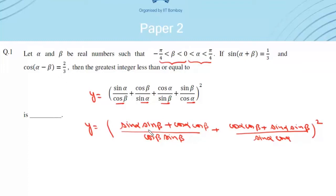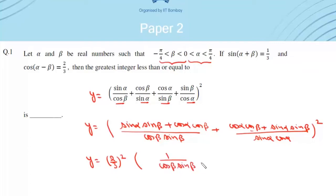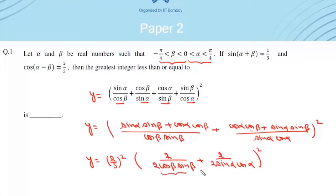Since cos(α-β) = 2/3, in both numerators we have 2/3. So we can write this as (2/3)² times (1/(cos(β)sin(β)) + 1/(sin(α)cos(α)))², and then we multiply and divide everything by 2. This gives us sin(2β) and sin(2α) in the denominators.